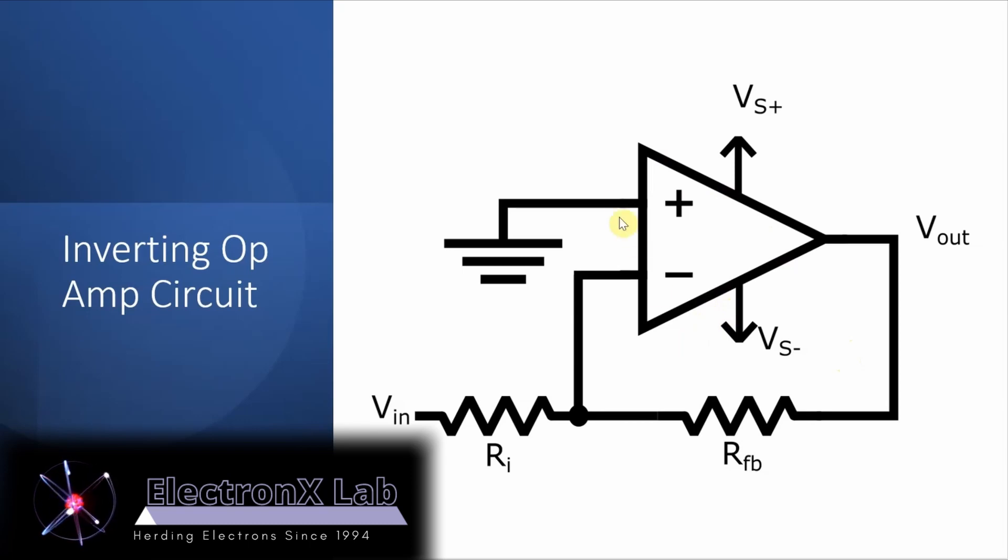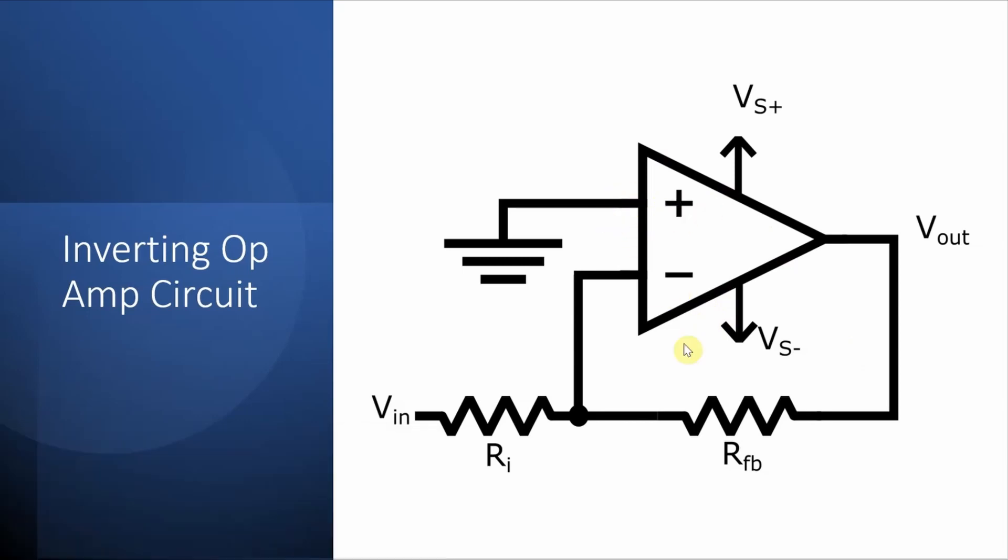This circuit has a grounded non-inverting terminal and an input voltage applied through an input resistor RI which is connected to the inverting terminal and a feedback resistor from the output back into the inverting terminal as well.